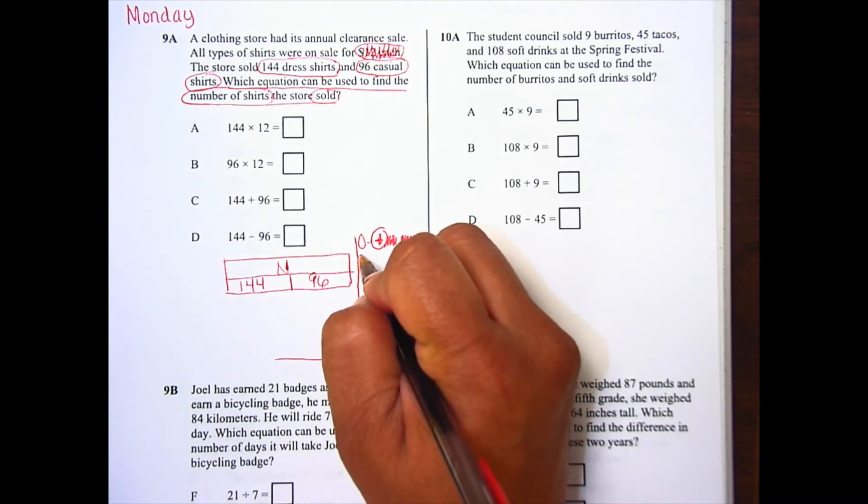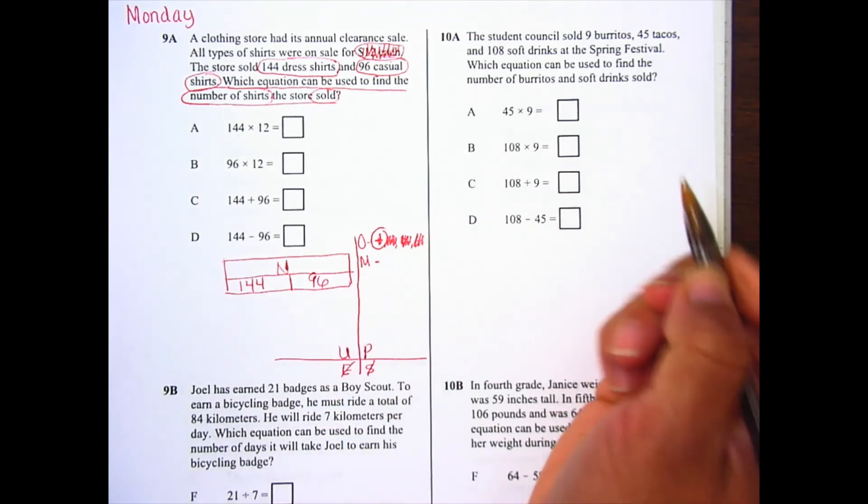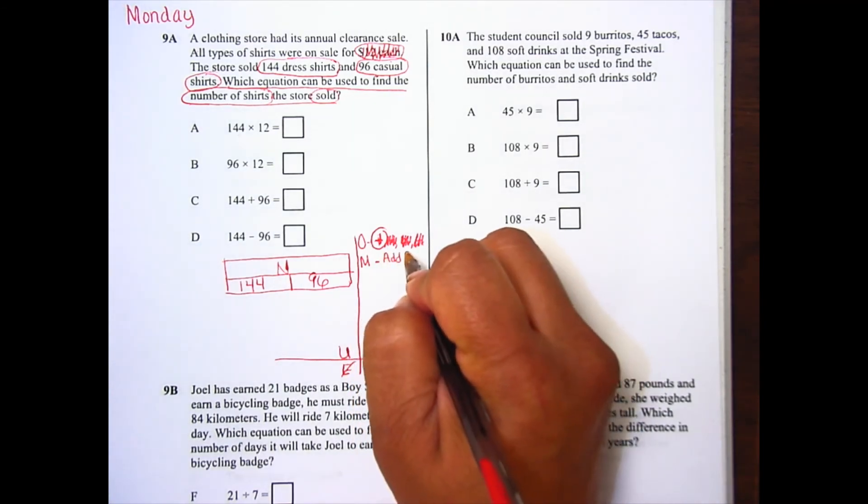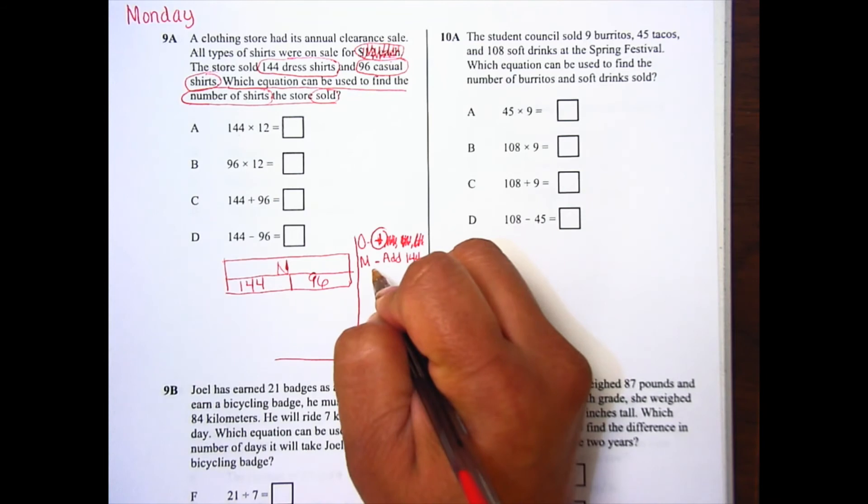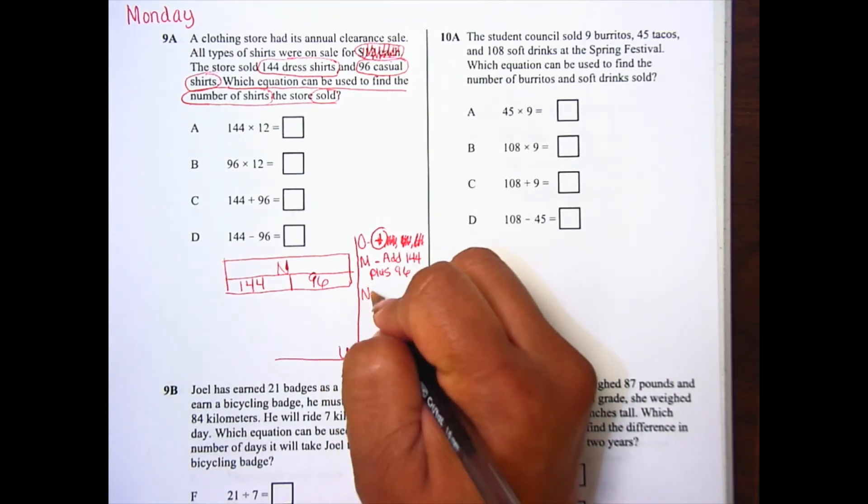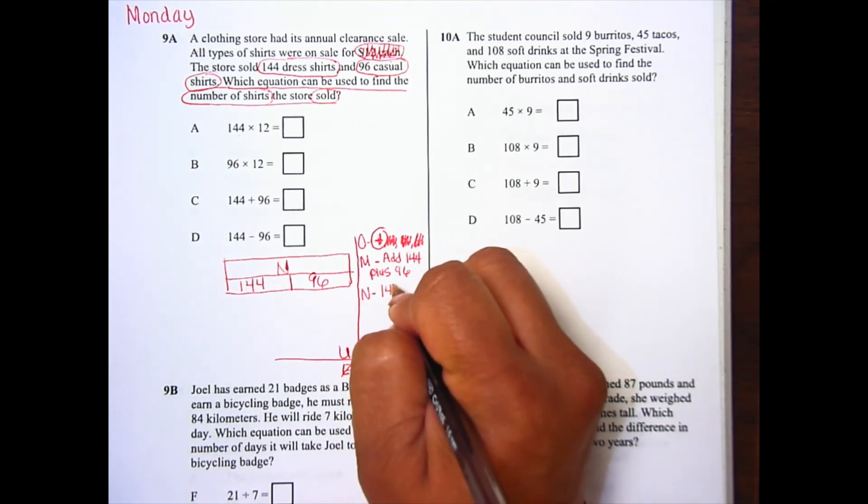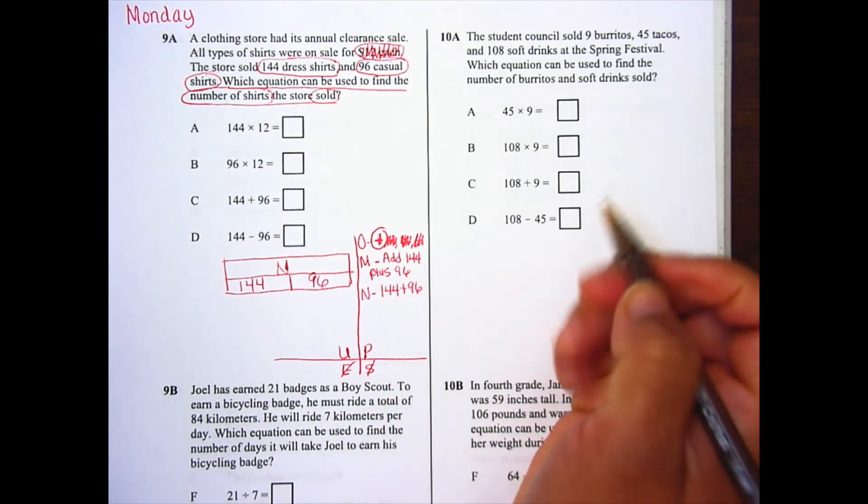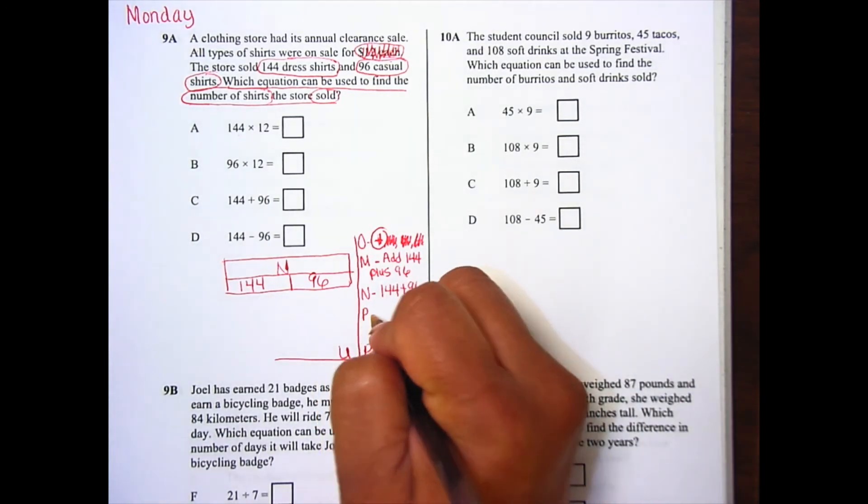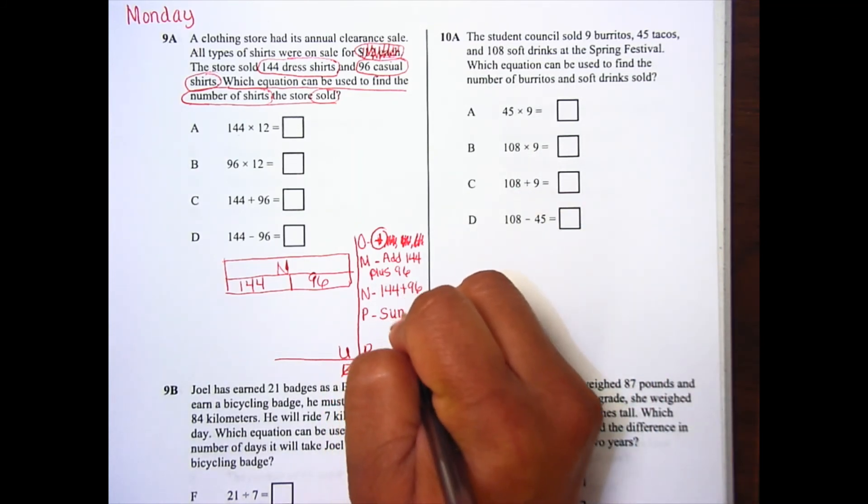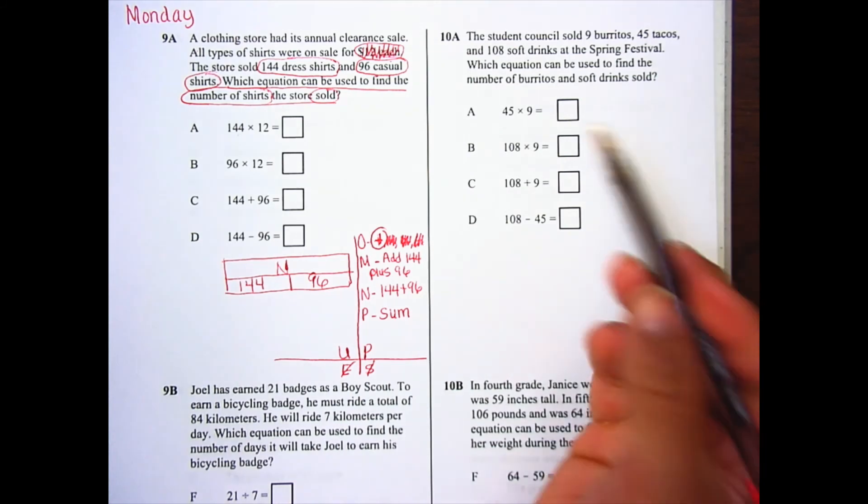My method, which you say it in words, is that you are going to add 144 plus 96. That's our method. Our number sentence would just be 144 plus 96. And then our process. We are finding the sum. And that's all we need to know.